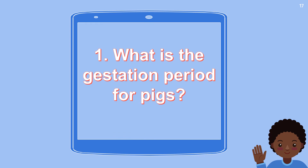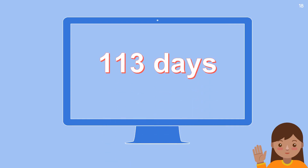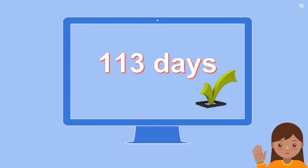Let's start our activity. For the first question: what is the gestation period for pigs? Your 10 seconds starts now. Time is up. The correct answer is 113 days.